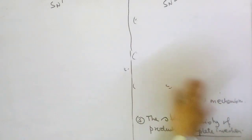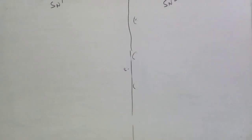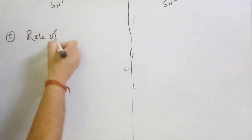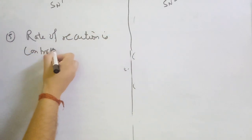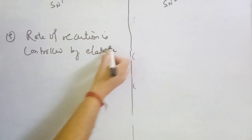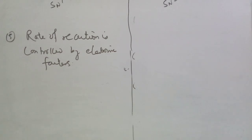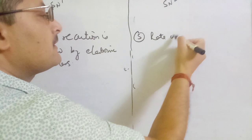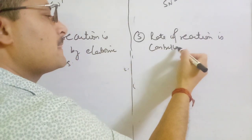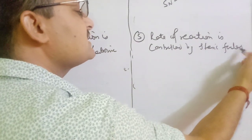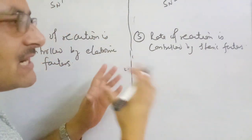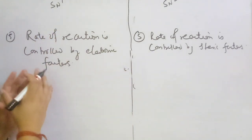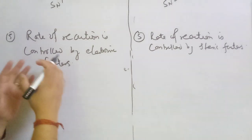Number five is the difference in the rate of reaction. For SN1, the rate of reaction is controlled by electronic factors — specifically the effect of electron-donating or electron-withdrawing groups. For SN2, the rate of reaction is controlled by steric factors, meaning steric crowding. SN2 is best with methyl and primary halides due to less crowding.